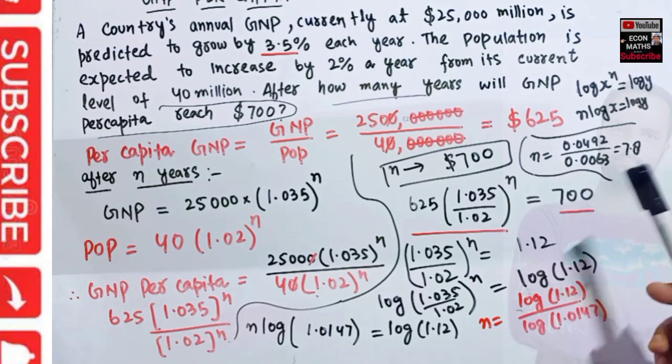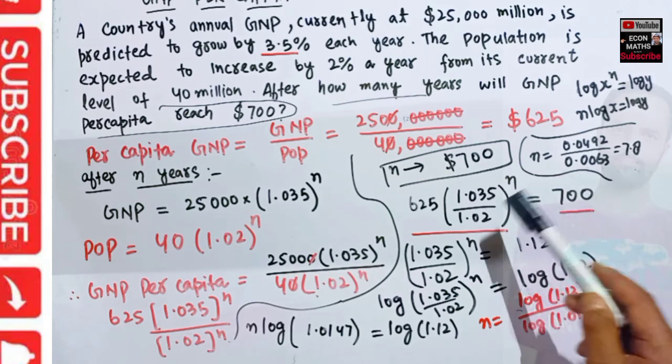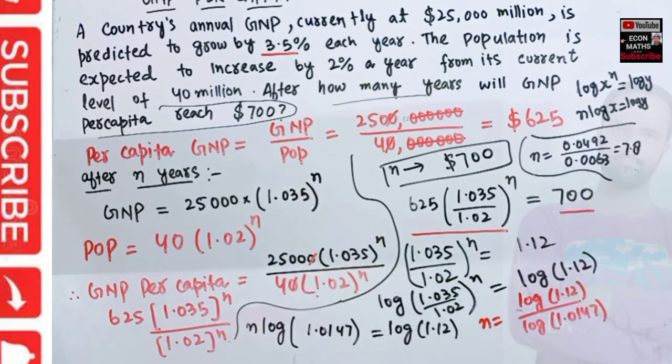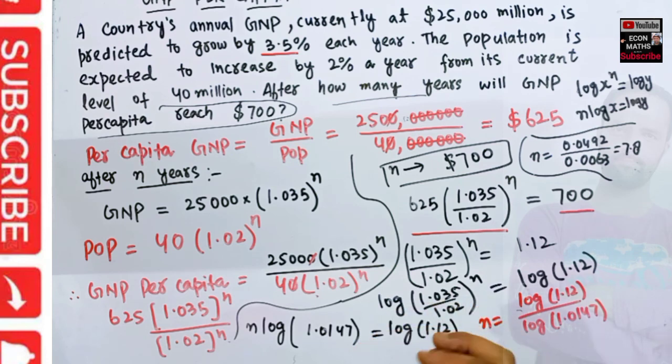So we can say that after approximately 7.8 years, meaning after 8 years, our GNP per capita will reach $700.